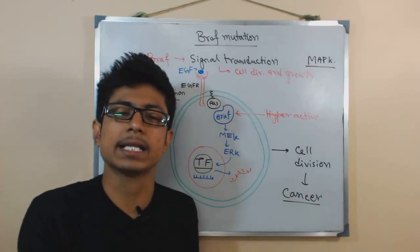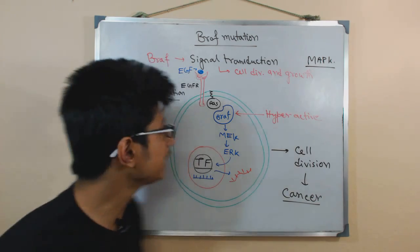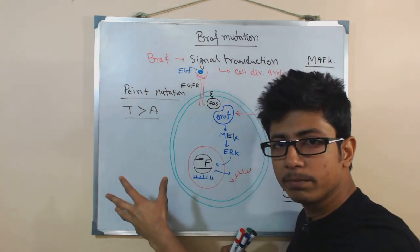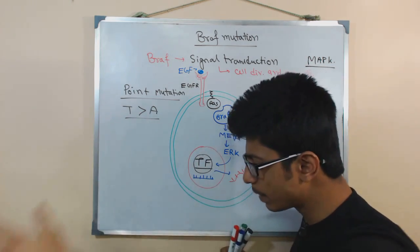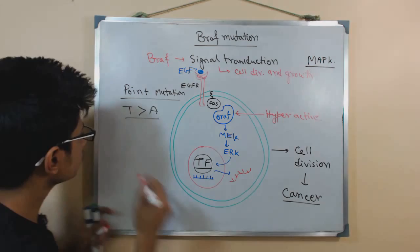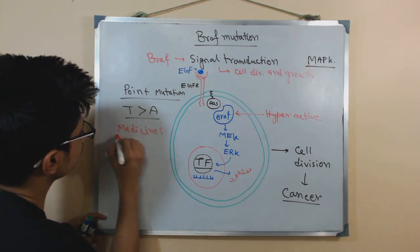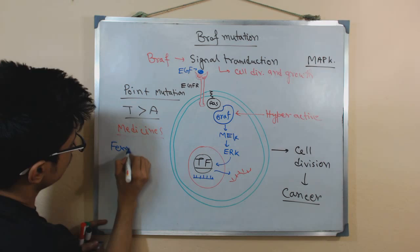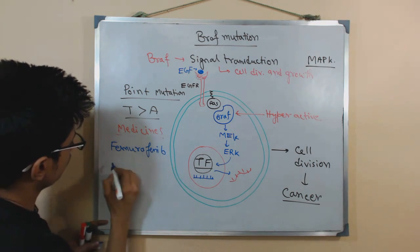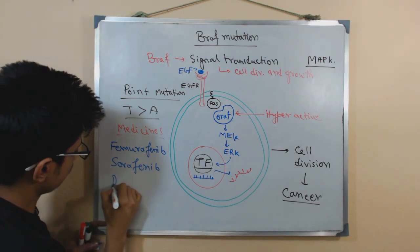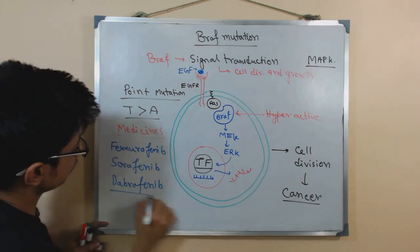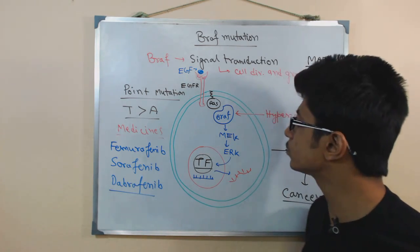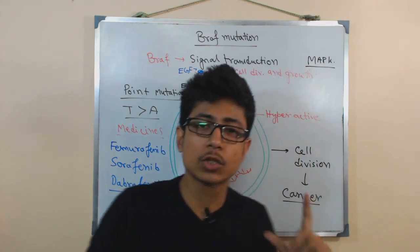As we now know this whole pathway and how BRAF is related with cancer, there are medicines nowadays in the market to fight against BRAF-related problems associated with the cancer pathway. Those examples are: vemurafenib, sorafenib, and dabrafenib. These are the different types of medications currently available to treat this kind of situation involving BRAF mutation.